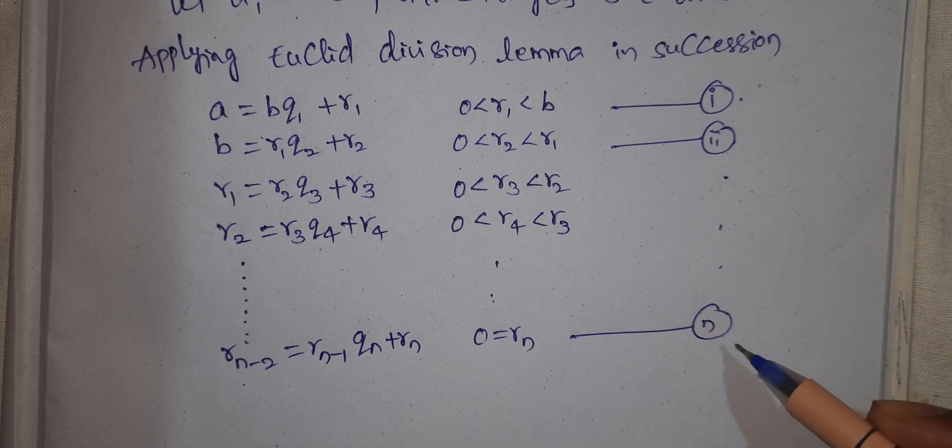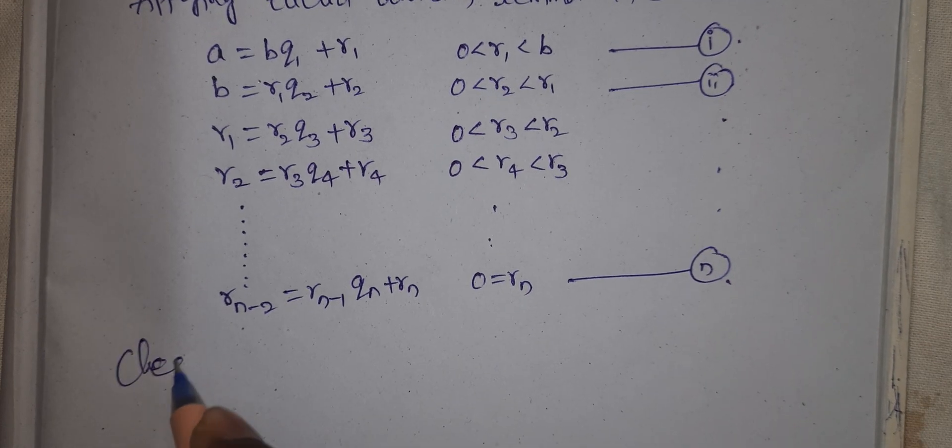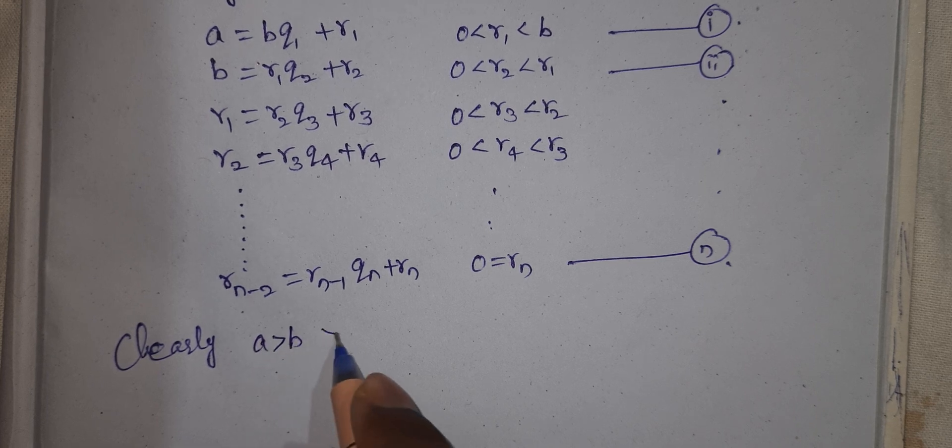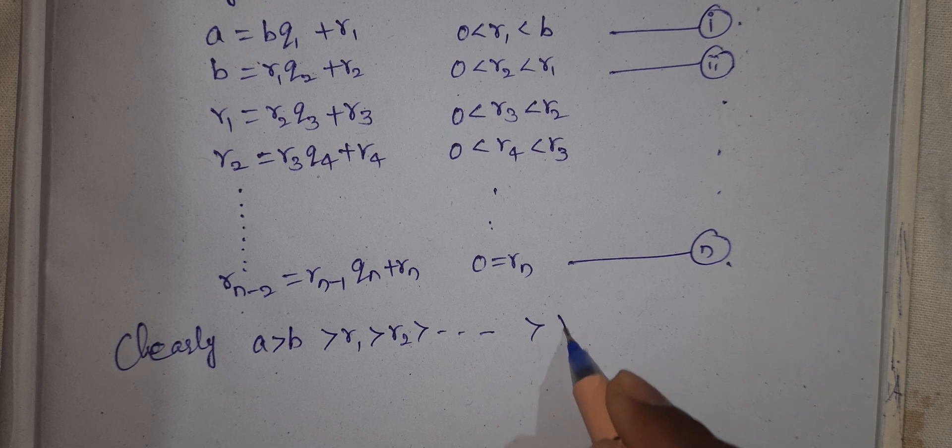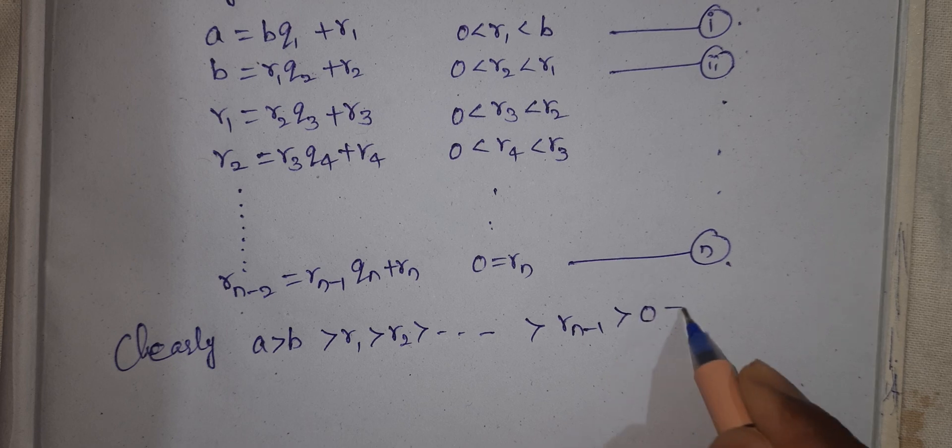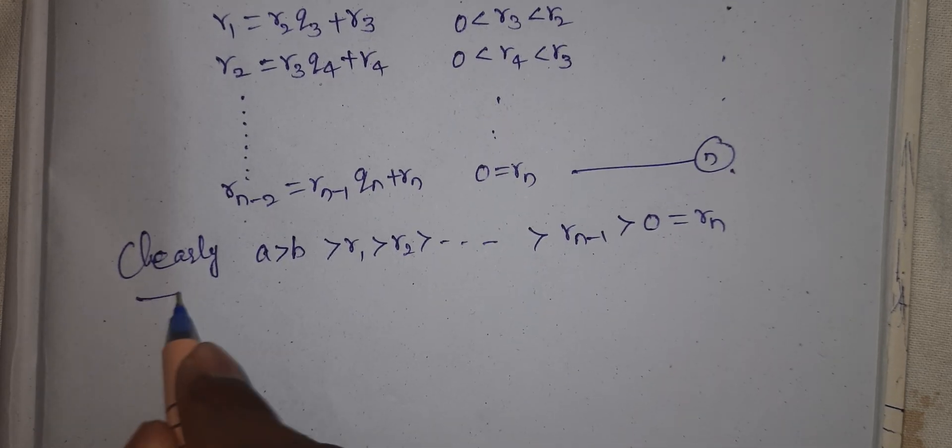What see, 1 to n, roman number 1 to n. Now clearly, A greater than B greater than R1 greater than R2, greater than so on, greater than Rn minus 1 greater than 0 equal to Rn.